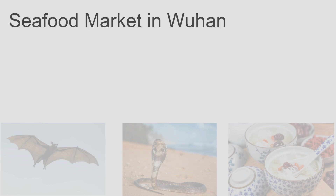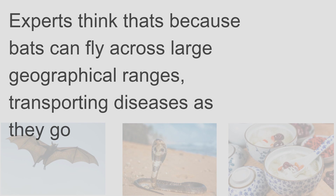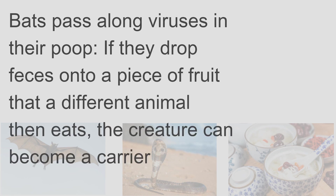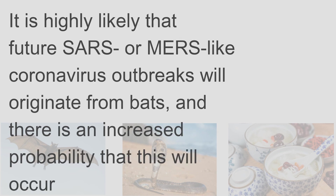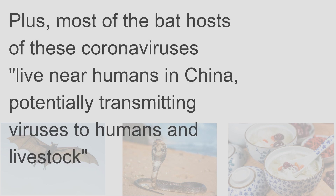Bats harbor a significantly higher proportion of zoonotic viruses than other mammals, according to a 2017 study. Experts think that's because bats can fly across large geographical ranges, transporting diseases as they go, making them an ideal host. Bats pass along viruses in their poop — if they drop feces onto a piece of fruit that a different animal then eats, that creature can become a carrier. It is highly likely that future SARS or MERS-like coronavirus outbreaks will originate from bats, with an increased probability that this will occur in China, where the majority of coronaviruses circulate and most bat hosts live near humans, potentially transmitting viruses to humans and livestock.